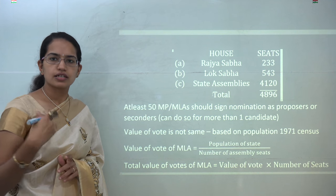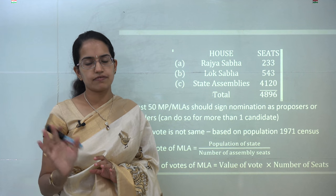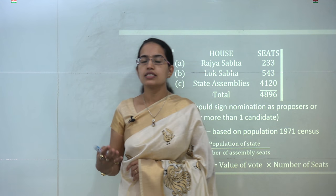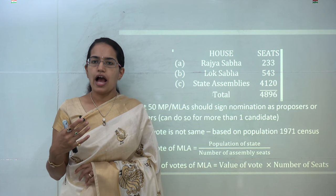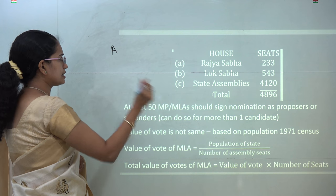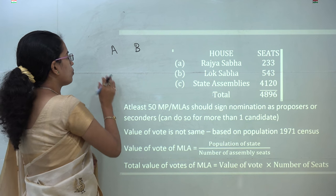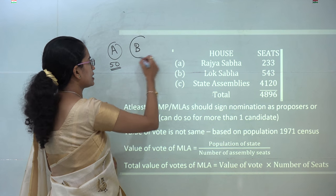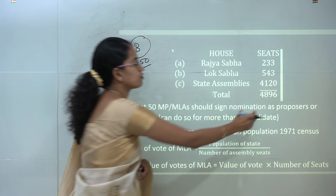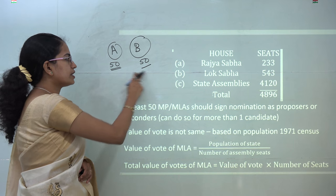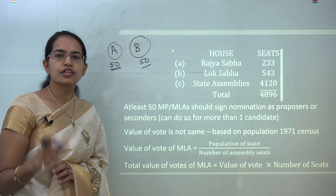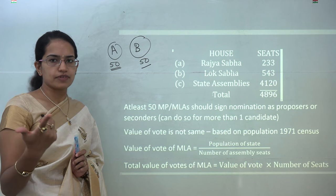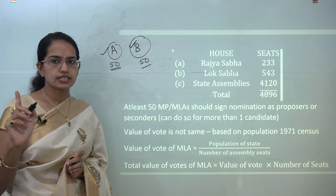Regarding how these votes become valid: first the proposers and seconders give the name in the nomination. A candidate must have at least 50 MLAs or MPs proposing his name out of the 4,896 total members. Only once they have these many supporters will they be considered for nomination in the presidential election. Importantly, a single proposer can propose the names of more than one candidate.